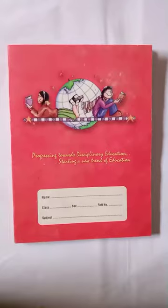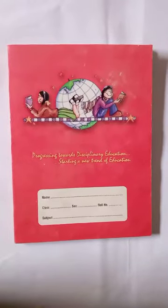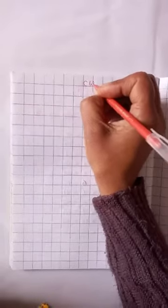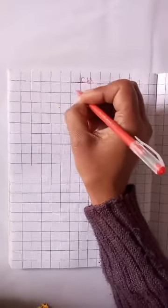Open your notebook. Children, this is your math page. You will also write with me. Firstly, we write CW and Date. C, W, and Date.